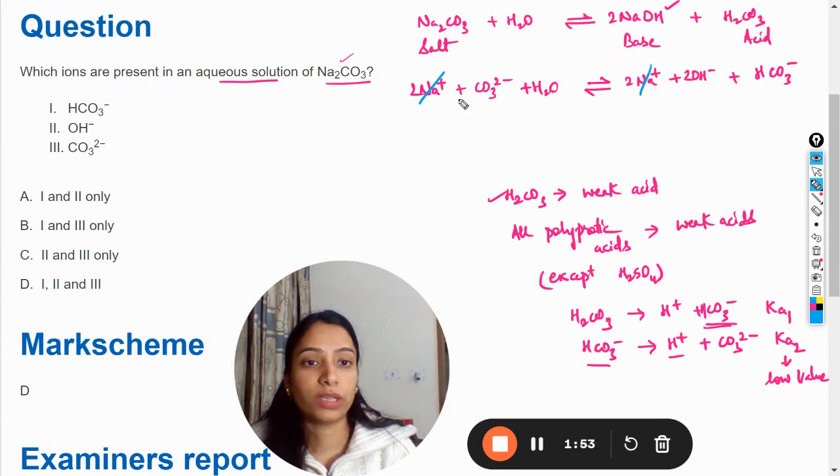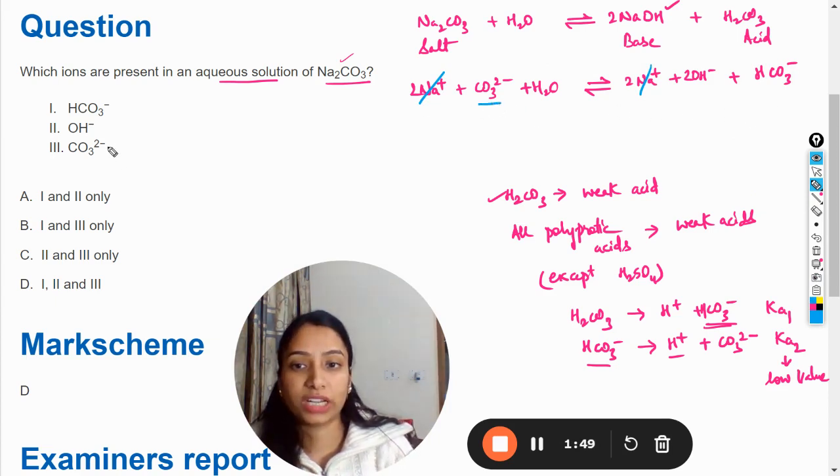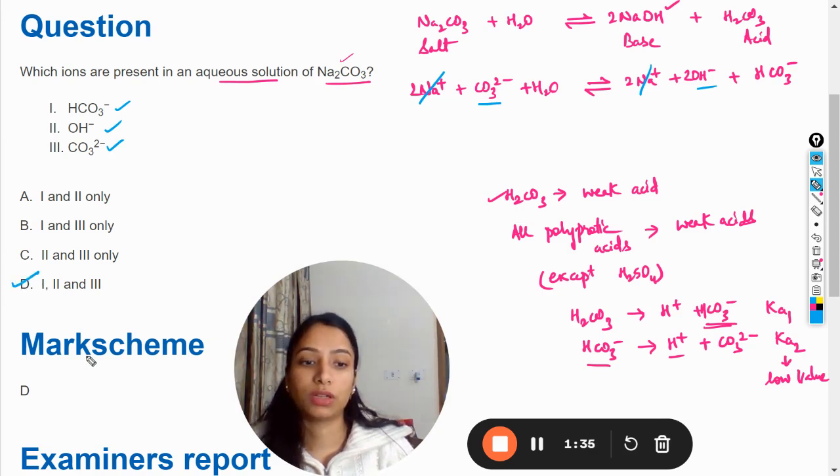sodium ions. So in the equilibrium there are CO3²⁻ ions, hydroxide ions, and HCO3⁻ ions. So all these ions are present in this aqueous solution of Na2CO3. The answer should be 1, 2, and 3, which is option D. The mark scheme also shows that the option is right.